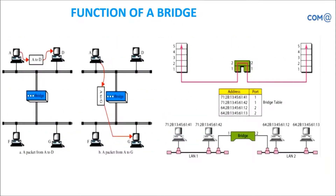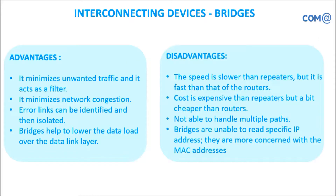Bridge helps to connect multiple networks together. Bridge is a form of device released before the switch, and you can see features similar to the switch available now. It minimizes unwanted traffic and acts as a filter — only specific traffic goes from one system to another, it will not send junk data. Error links can be easily identified with the help of checksum details, and it helps to lower the data load at the data link layer.